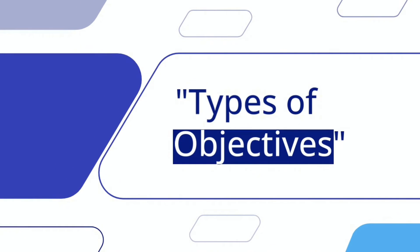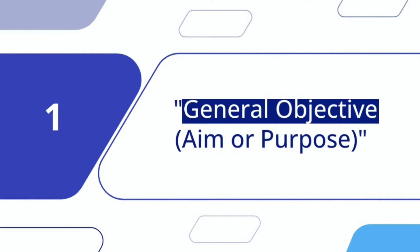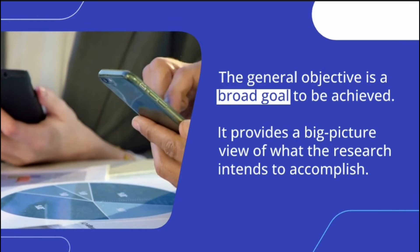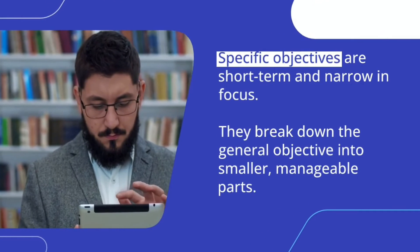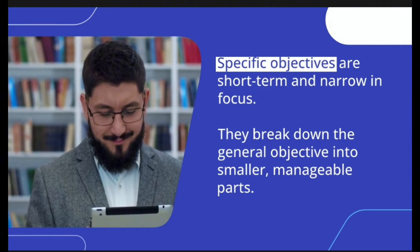There are two types of objectives: the general objective and the specific objective. General objectives are also known as the aims or purposes of the study — they are the broad goal to be achieved, stating what the researcher expects to achieve in general terms. Specific objectives are short-term and narrow in focus. We break down the general objective into smaller, logically connected parts to form specific objectives. Specific objectives clearly specify what the researcher will do, where, and for what purpose.